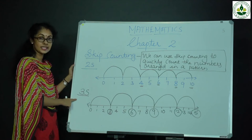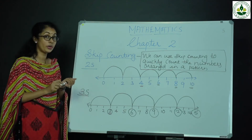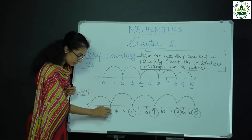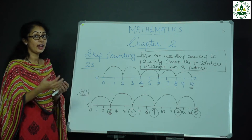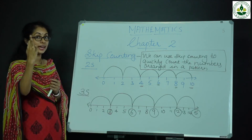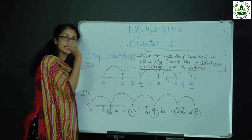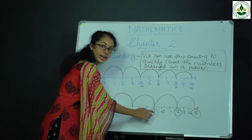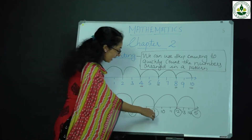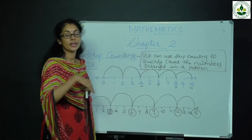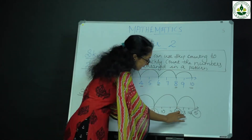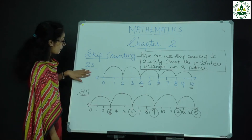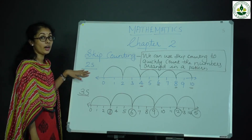Once more — counting of 3s. Starts from 0, counting 3 times: 1, 2, 3. Then again 3 times: 4, 5, 6. Then again 3 times: 7, 8, 9. Then 3 times: 10, 11, 12. Then 3 times: 13, 14, 15. This is skip counting of 3s. For skip counting of 2s we count 2 times, for 3s we count 3 times.